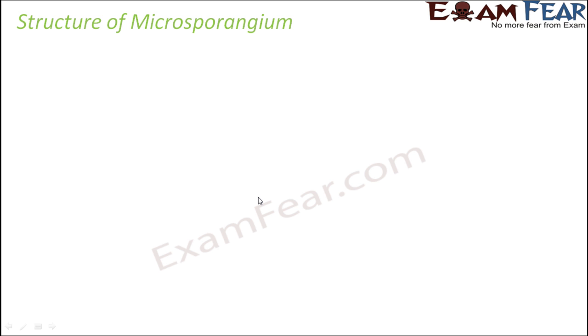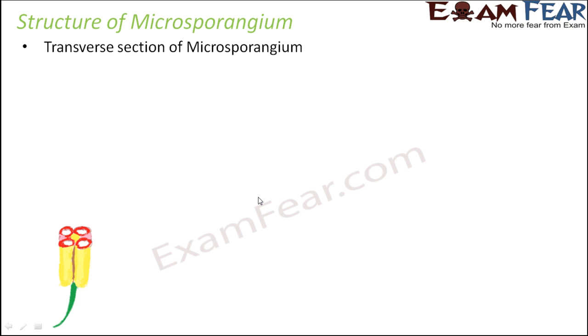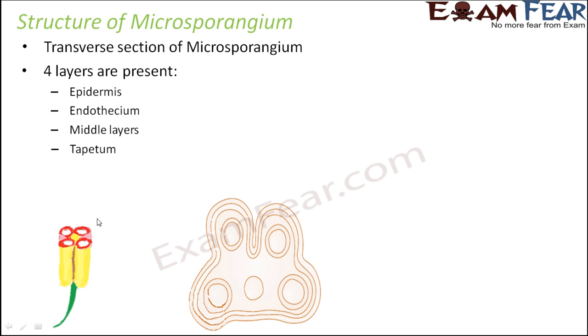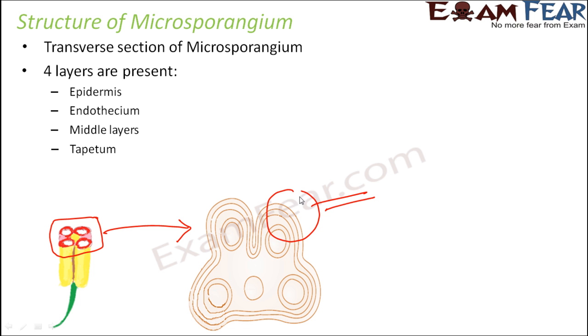Now let us try to understand the structure of microsporangium in more detail, because this is where we are gradually going deeper to where exactly the male gametes are formed. We will look at the transverse section of the microsporangium. If you magnify the cross-section closely, you will find that there are four layers present around the microsporangium: epidermis, endothecium, middle layers, and tapetum.